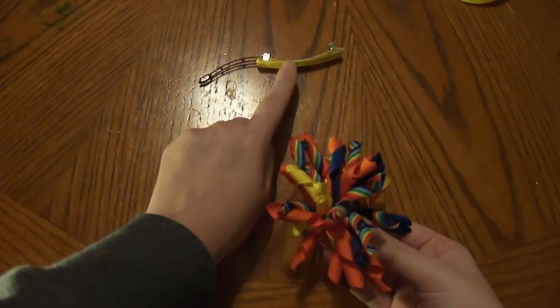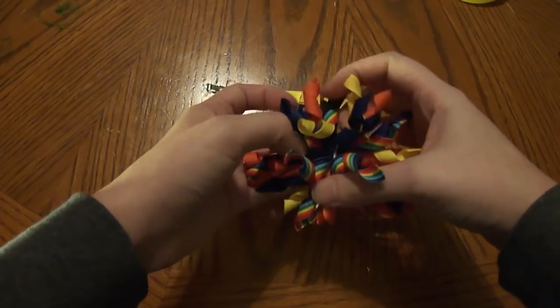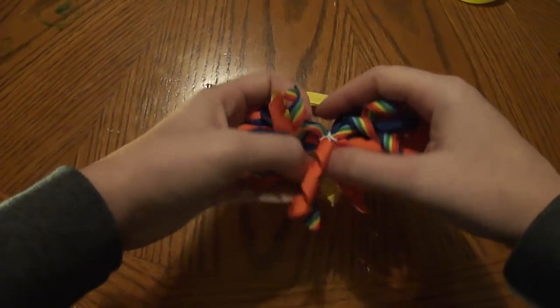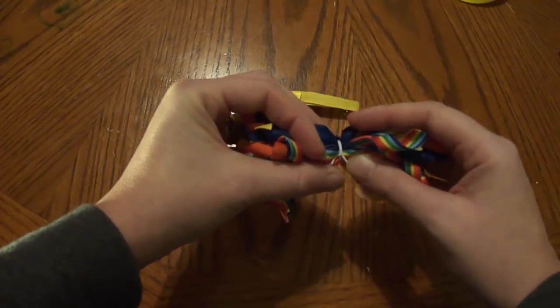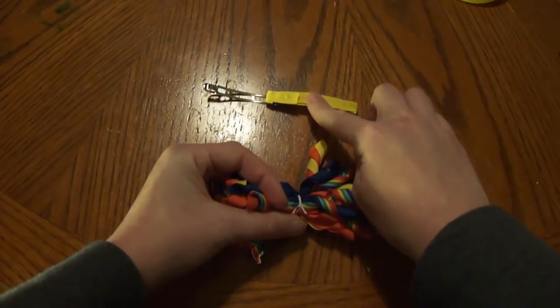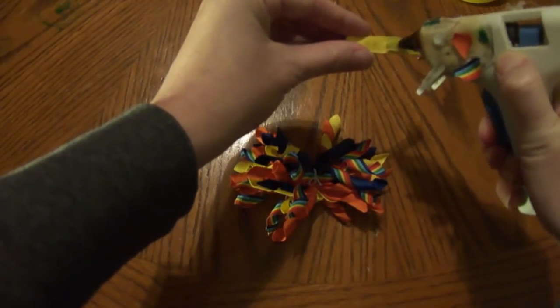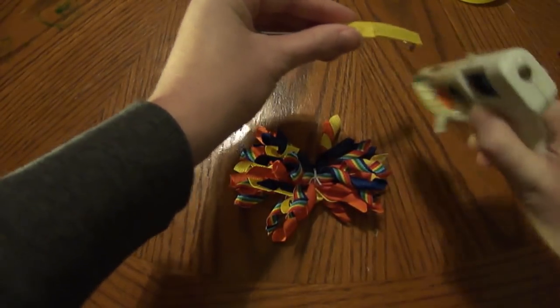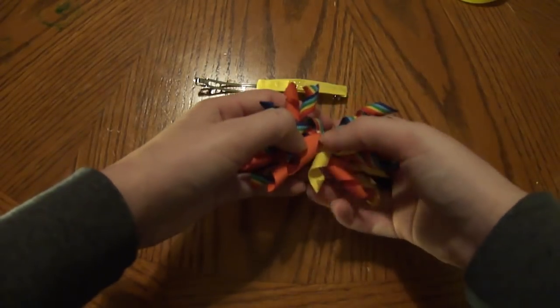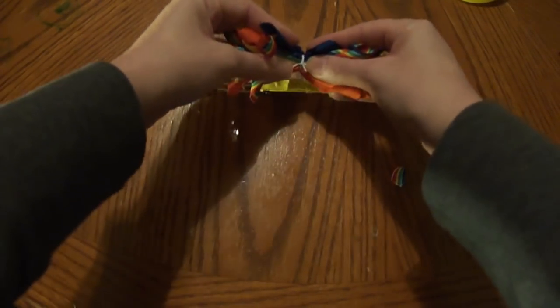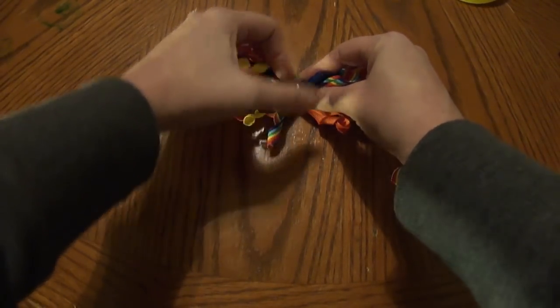Now we're going to put our corker onto our barrette. And what I do is I take my corker and I find the center. Just kind of spread out your corkers evenly. Add a dab of glue in the middle of my barrette. And then I'm going to place my corker spread out on the glue. Press down for a few seconds.